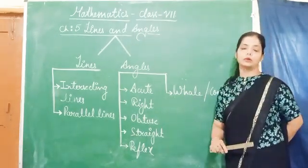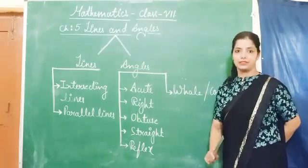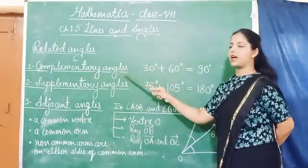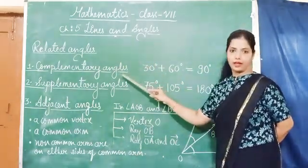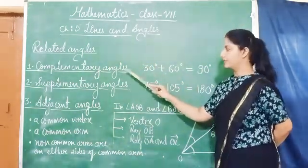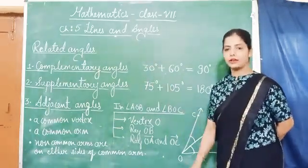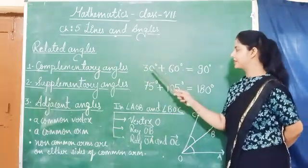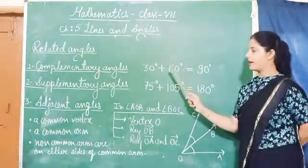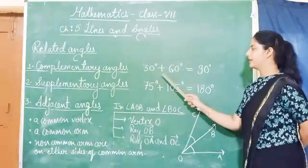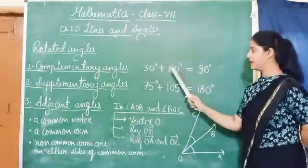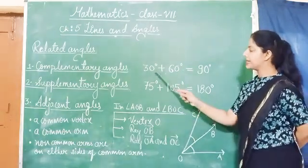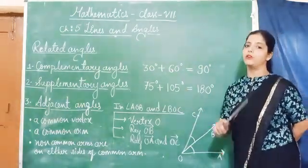Now we will learn about the related angles. In related angles, the first type is complementary angles. A pair of angles whose sum is 90 degrees is called complementary angles. If we take one angle as 30 degrees and the other angle as 60 degrees, their sum is 90 degrees. It means they are complementary angles.